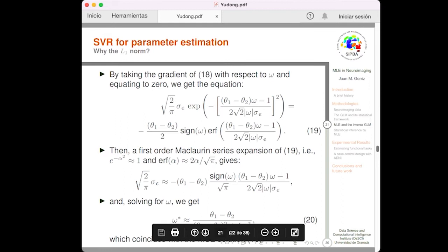And, by taking the gradient in the latter equation, taking the gradient here, with respect to the omega, and equating to 0, we get this equation. This equation, of course, cannot be solved analytically. But, if we use the first order McLaurin series expansion of this equation, we finally get this equation. And, solving for omega, we get the same solution as the one obtained by the MSE solution.